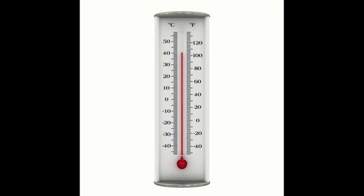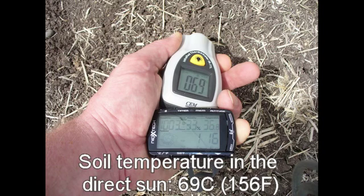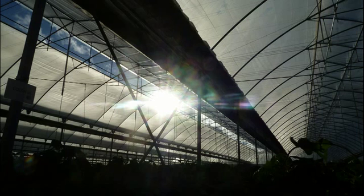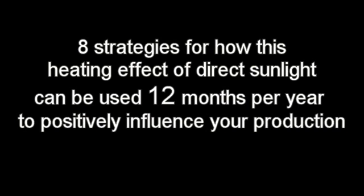If you only used a conventional air temperature sensor to manage your crops, then you would never be aware of the dramatic differences in leaf, fruit, and soil temperature compared to when plants are under a roof or exposed to direct sunlight. You would also not be aware of at least eight strategies for how this heating effect of direct sunlight can be used 12 months per year to positively influence your production.